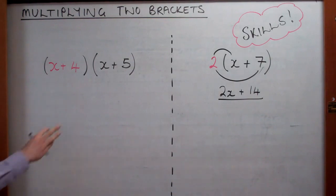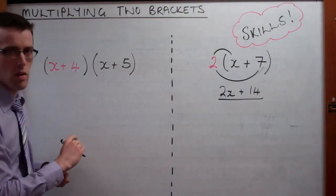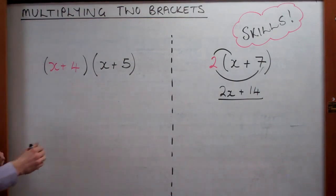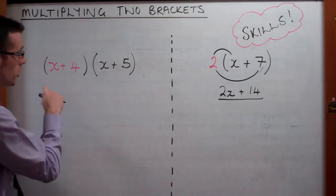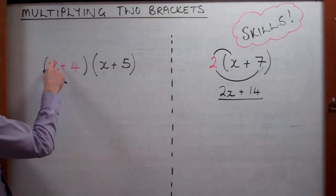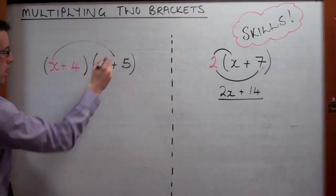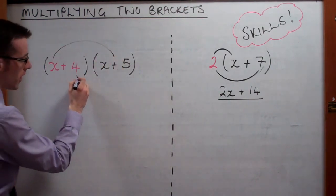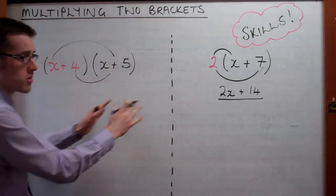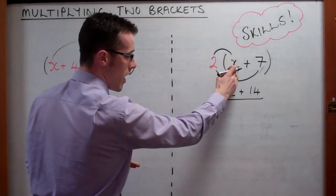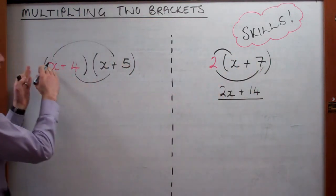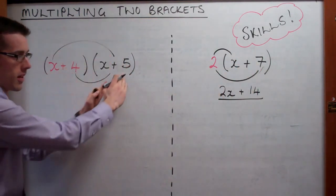So when we move that up a level and we look at a pair of brackets, we're doing the exact same thing. So what we're doing is we are multiplying the x by this bracket, then we're multiplying the four by this bracket. So it's the exact same skill. See? Two by the x, two by the seven, x by this bracket, four by that bracket. So it's the same skill.